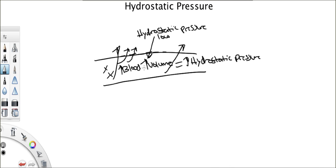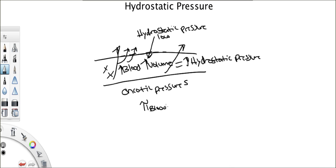We talked about how when you have really high hydrostatic pressures, you get leakage of fluid. Now let's look at this in combination with oncotic pressure, because a lot of questions have that formula where you have to calculate if there's net filtration or net absorption. There's an oncotic pressure in the blood or the capillary, and an oncotic pressure in the interstitium.